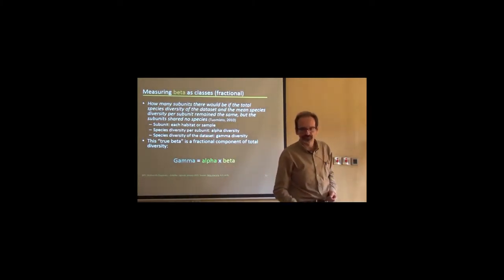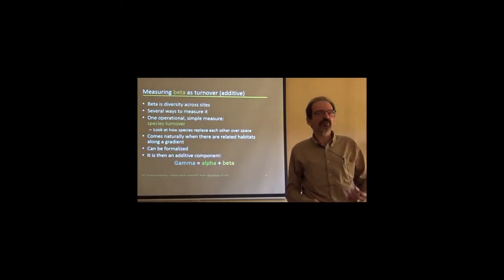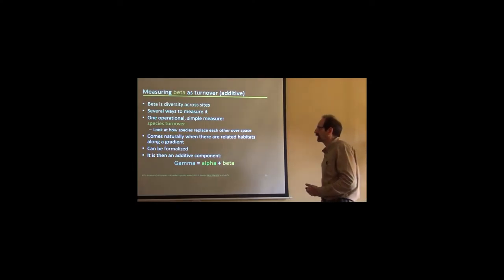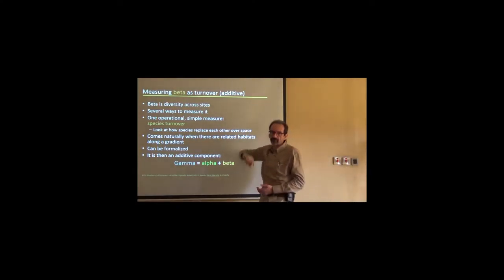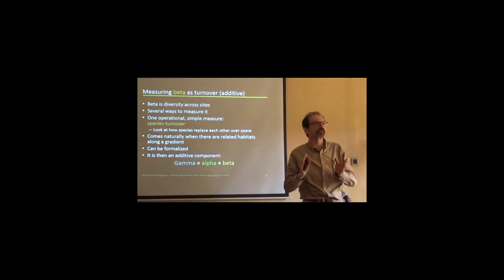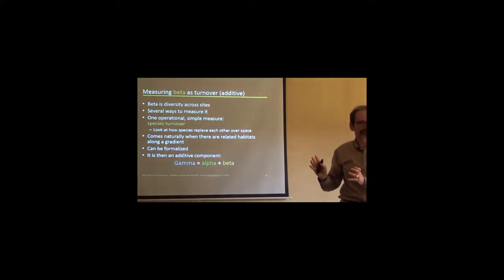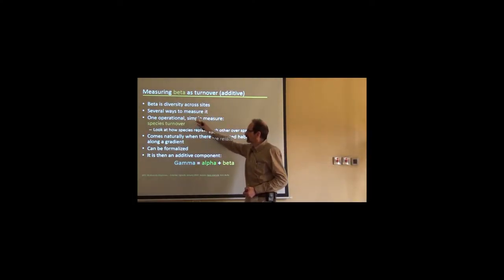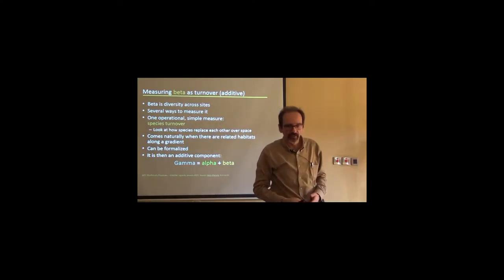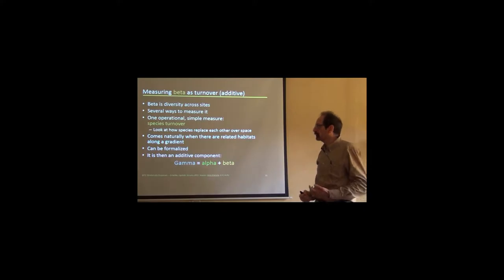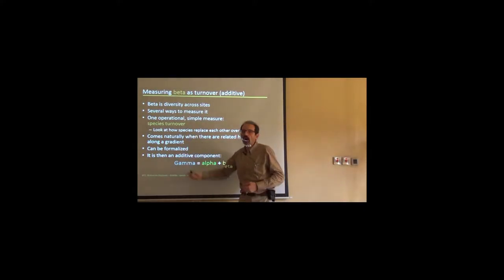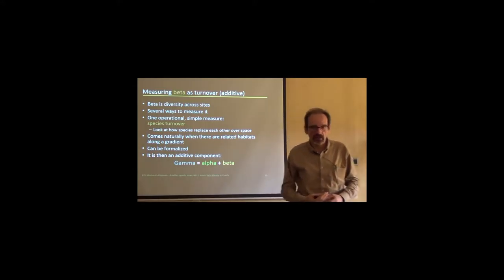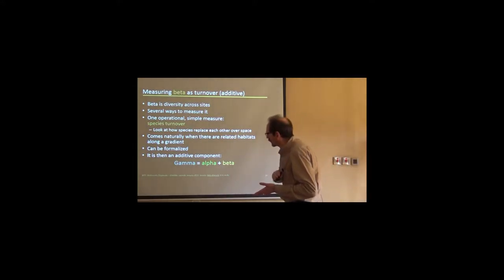But there is an alternate way too. We can measure beta as a turnover. And then it's an additive component of diversity. The previous component was a multiplicative component, alpha times beta. But it could also be an additive component. Beta is diversity across size. One operational and very simple measure is species turnover. Gamma would be then alpha plus beta.